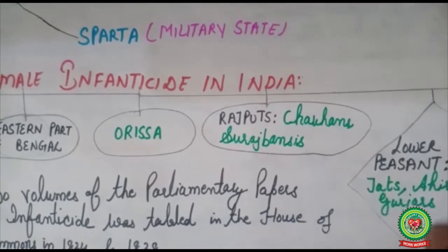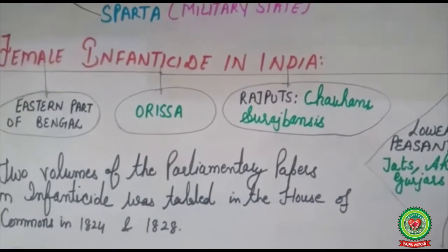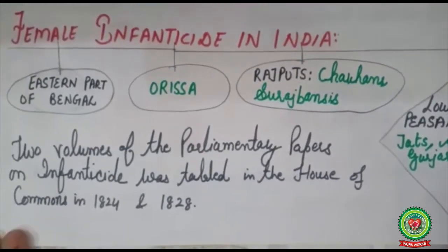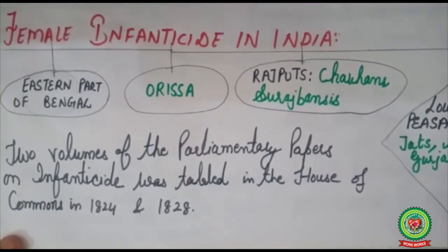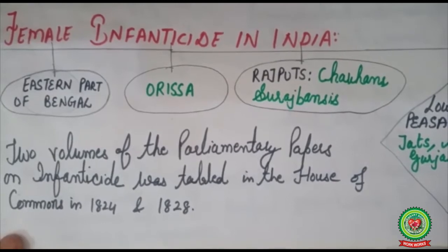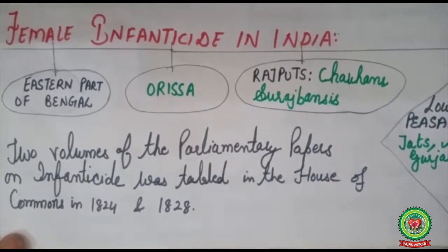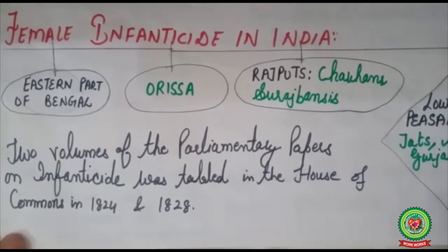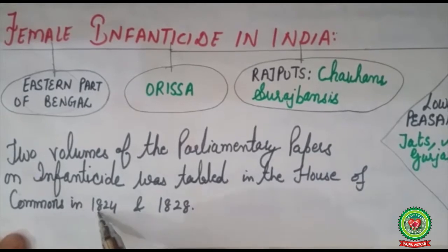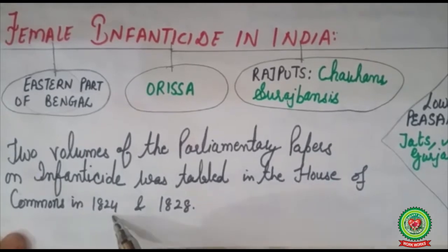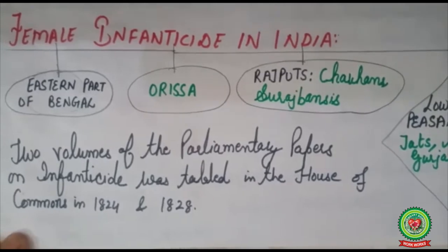The problem was so serious for the British government that two volumes of parliamentary papers on infanticide were tabled in the House of Commons — the lower house of the British Parliament — in 1824 and 1828.